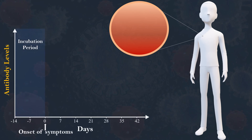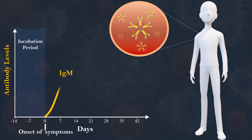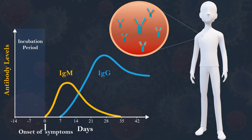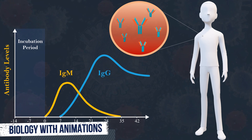Antibodies can come in different varieties known as isotypes or classes. IgM antibodies are produced against a viral antigen in the early stages of infection and are detectable after 4-7 days after symptoms develop. Following that, IgG antibodies are produced 7-14 days after the onset of symptoms and are detectable for months and even years, depending upon the antigen and the individual. These antibodies can also be detected if a person has an infection without any symptoms.